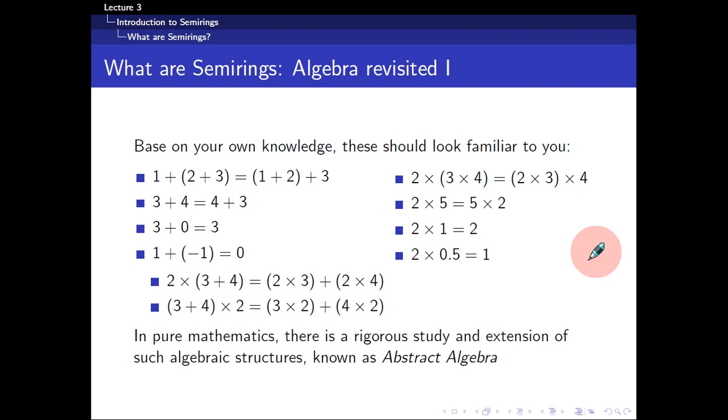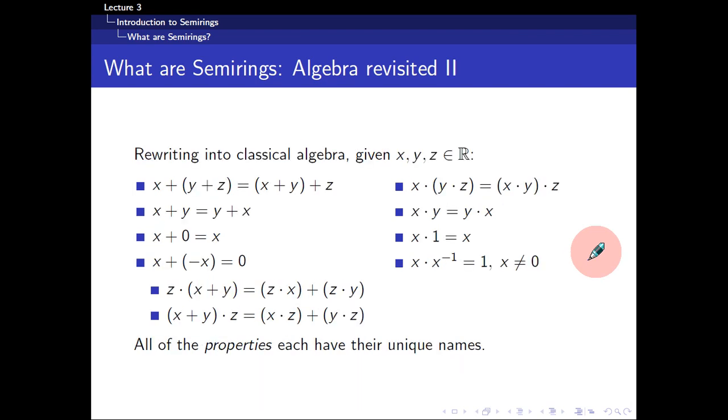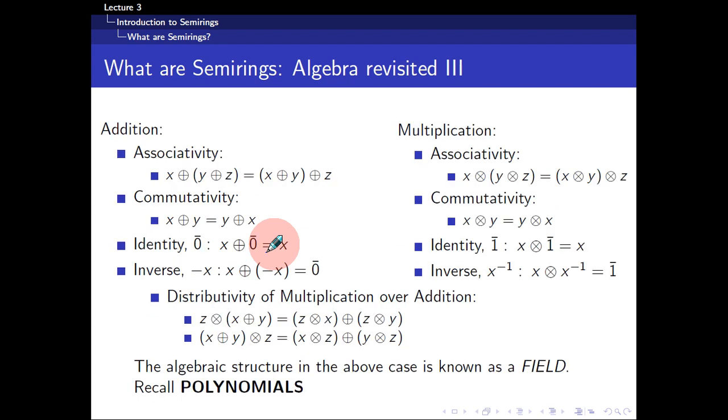So if I were to rewrite this using algebra, classical algebra, and given any three real numbers, all these would still make a lot of sense to most of you. But, to a mathematician, all these are actually properties with their own unique names. So I will rewrite this into a newer type of notation. You can see that I've replaced the classical addition with this O-plus, and then I've replaced the classical multiplication with the O-times.